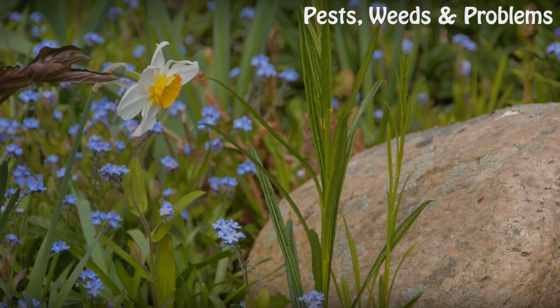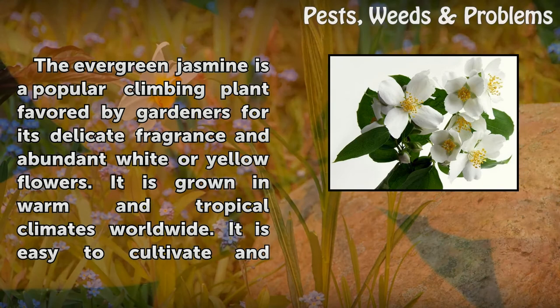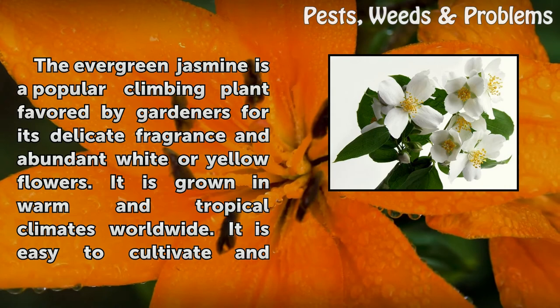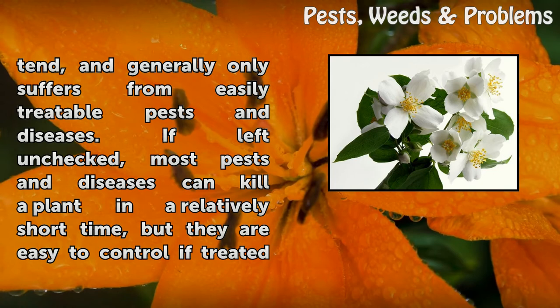Jasmine Plant Disease. The evergreen jasmine is a popular climbing plant favored by gardeners for its delicate fragrance and abundant white or yellow flowers. It is grown in warm and tropical climates worldwide. It is easy to cultivate and tend, and generally only suffers from easily treatable pests and diseases.